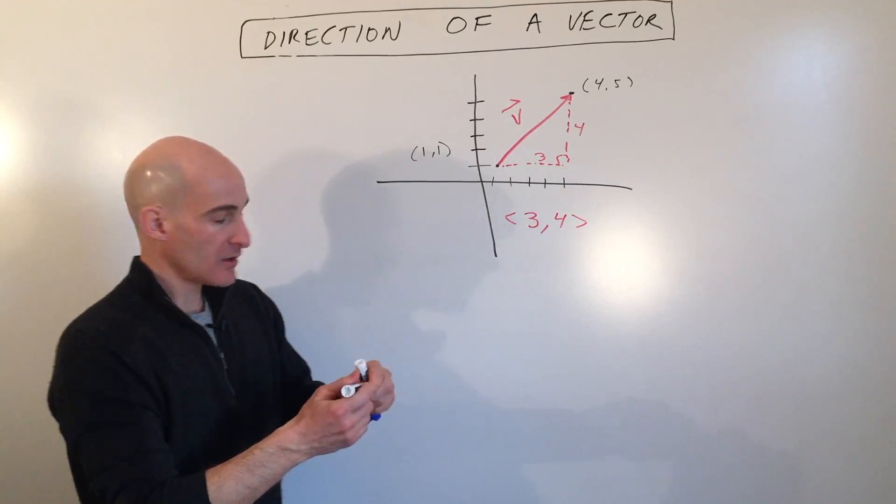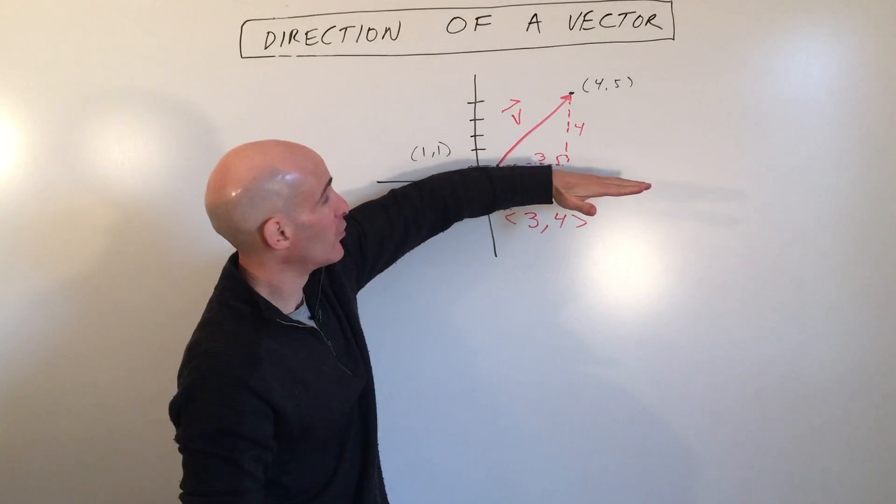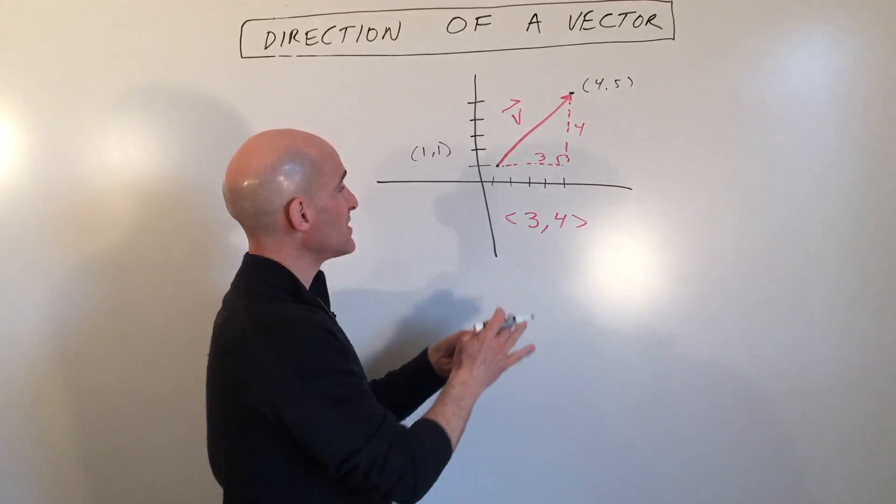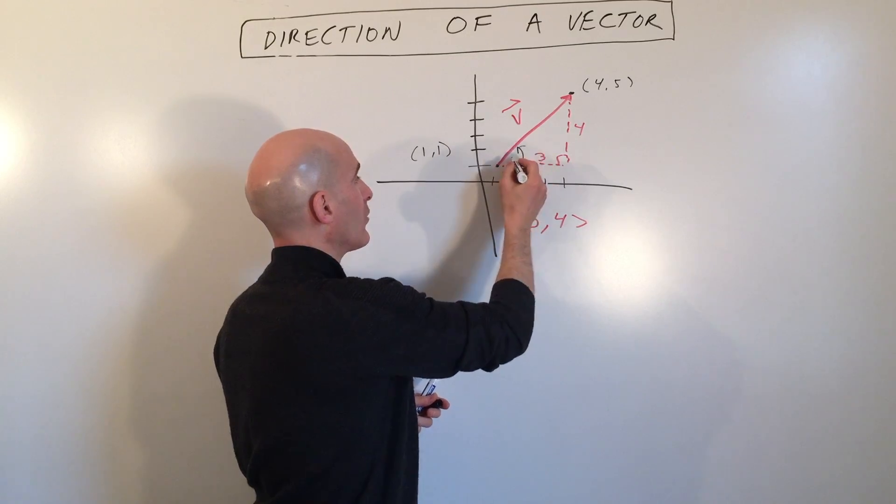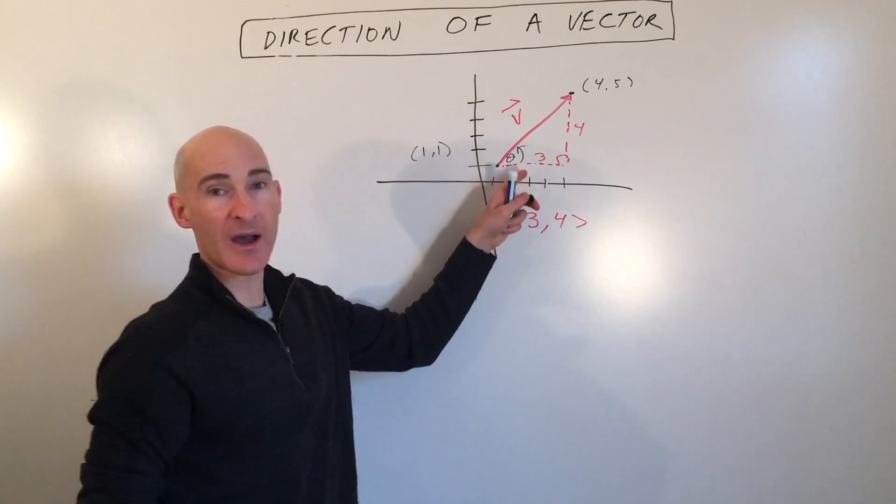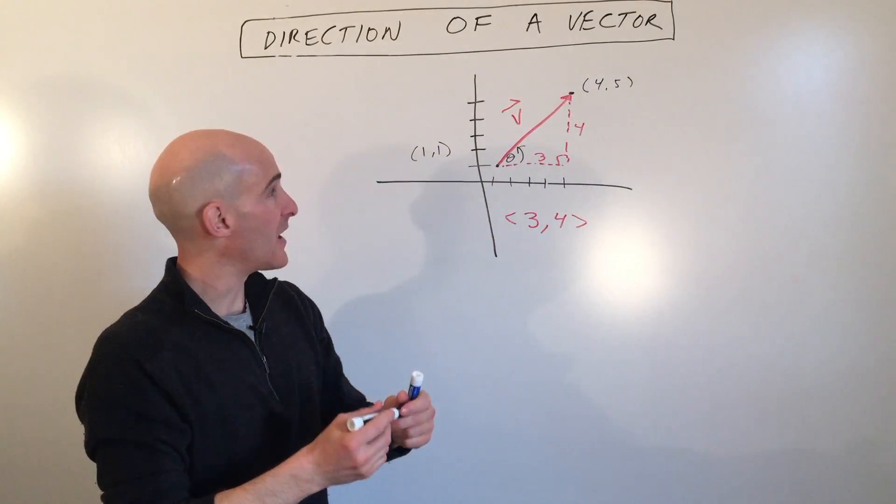The direction of the vector is the angle that the vector makes with the horizontal. You can see here, this is our angle, and we'll denote it by the Greek letter theta. So it's the angle with the horizontal.